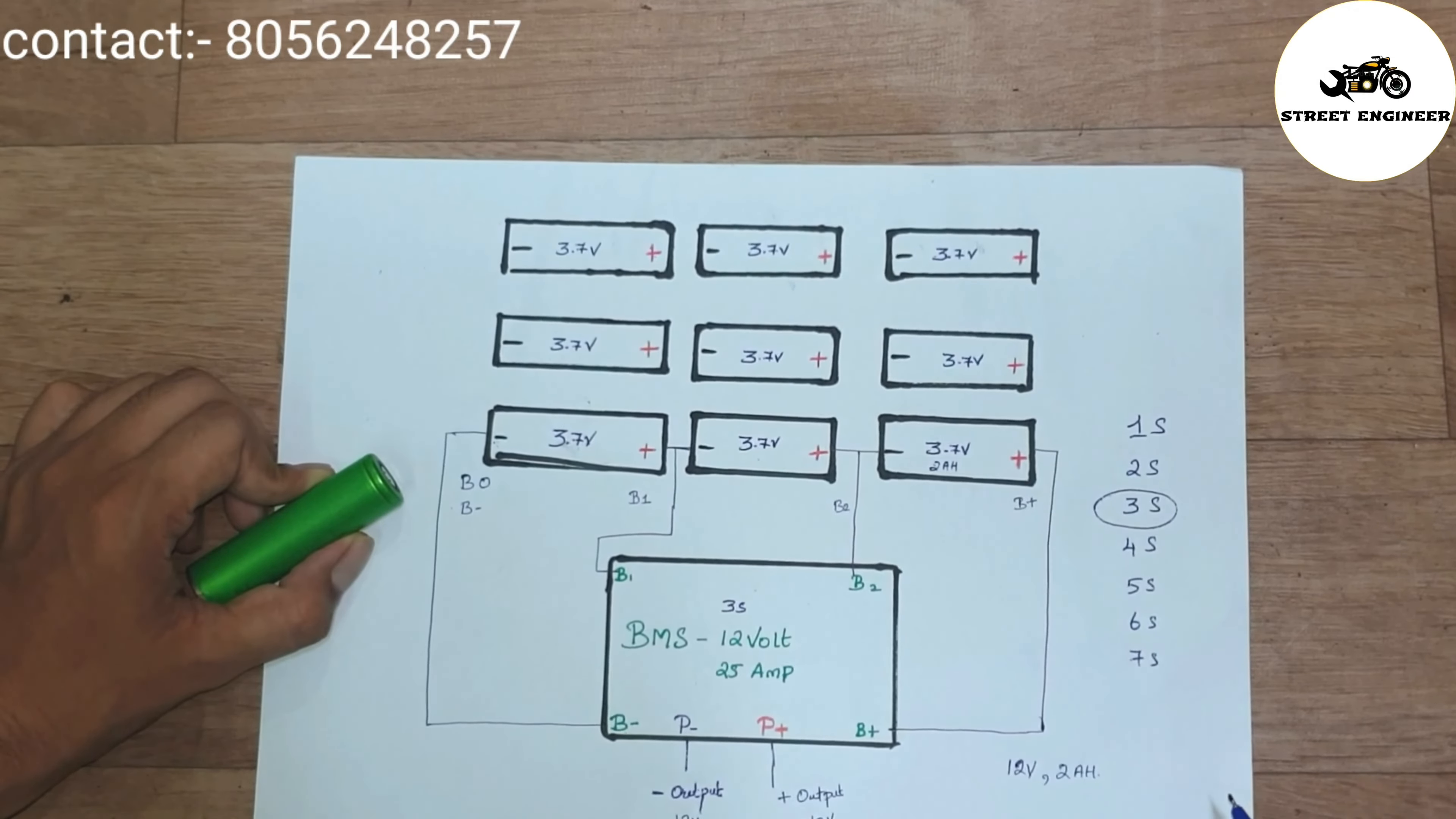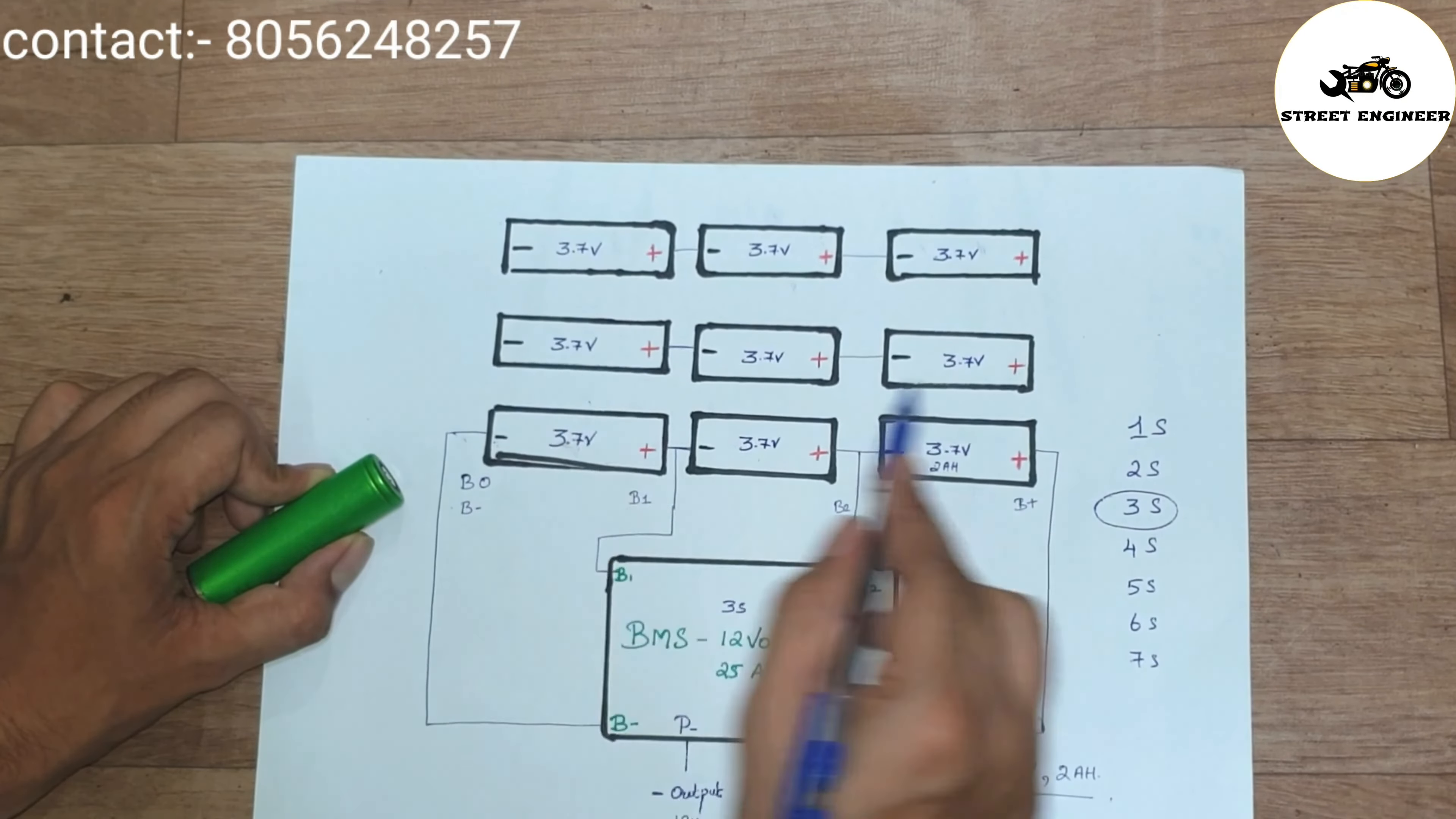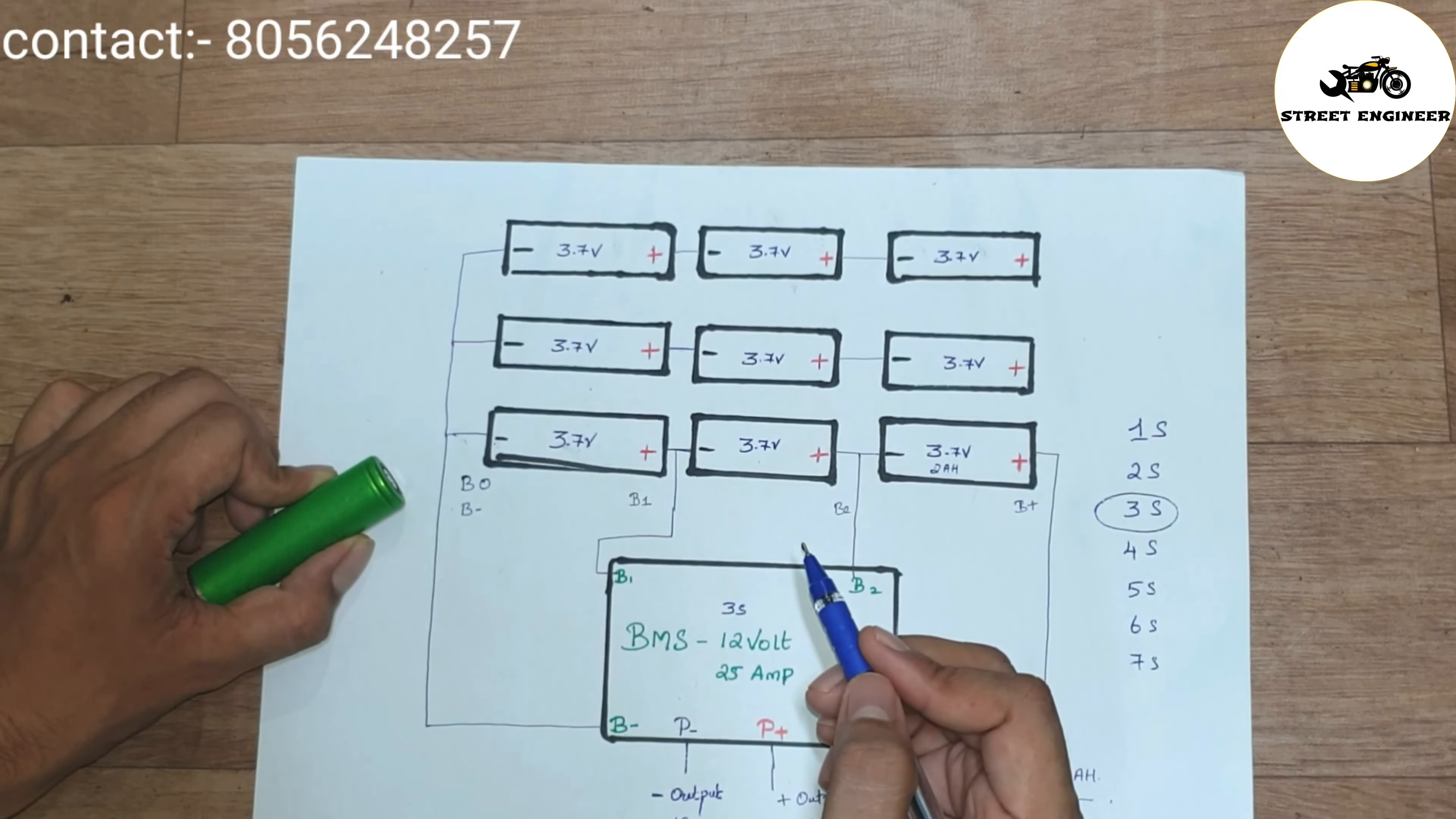Now to increase battery AH, I have to connect in parallel. Before that, I have to connect all the 3 cells in series connection and make 3 sets. And then connect all the 3 sets in parallel connection like this.